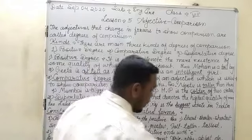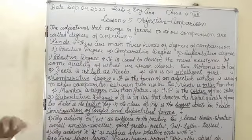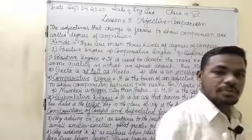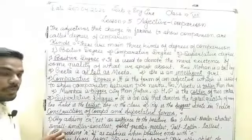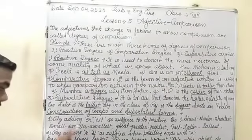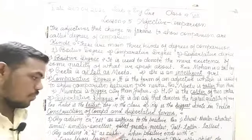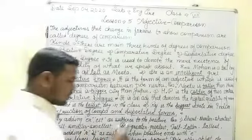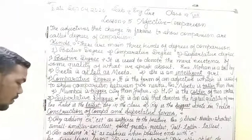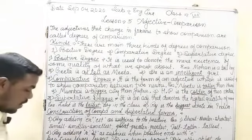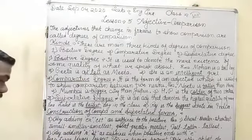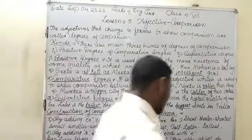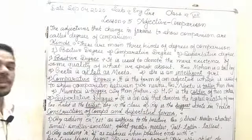Further examples for Rule 2 — when positive ends with 'e,' add only -r or -est: brave → braver → bravest; able → abler → ablest. In Hindi: jab bhi positive degree ka noun 'e' se finish ho, comparative mein only 'r' jodo aur superlative mein 'est' jodo — large larger largest, brave braver bravest, able abler ablest.